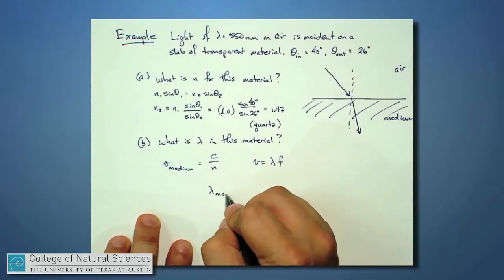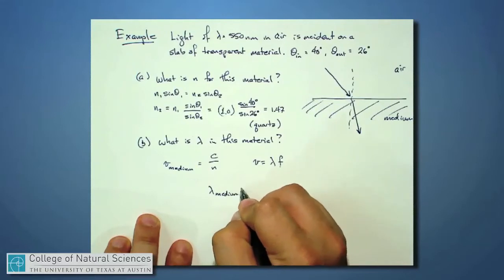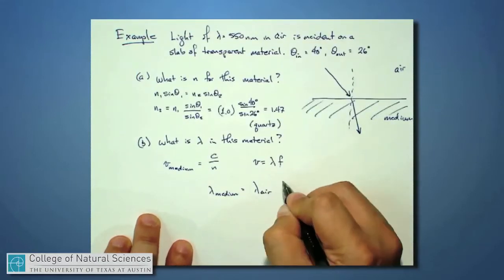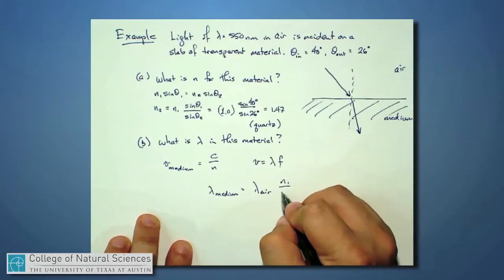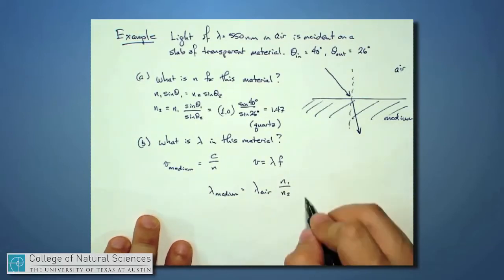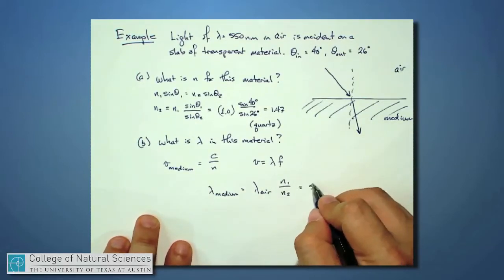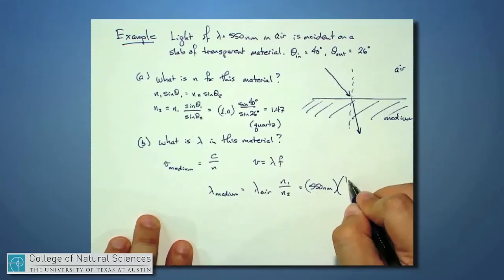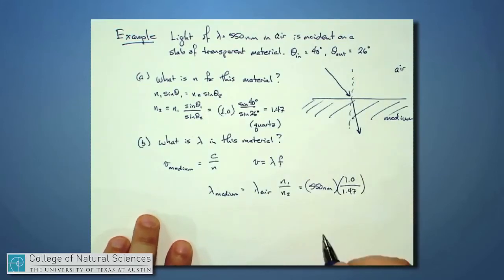And as I said earlier, the lambda in the material will equal the lambda in the air times the ratio N1 over N2. And this would be 550 nanometers times the ratio of 1.0 in the numerator divided by what I just found out, 1.47 in the denominator, because I just calculated 1.47. This turned out to be about 374 nanometers.